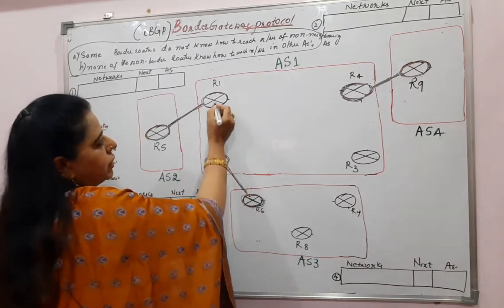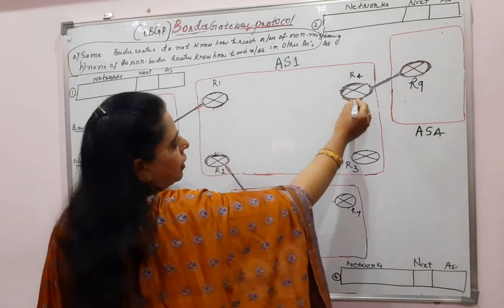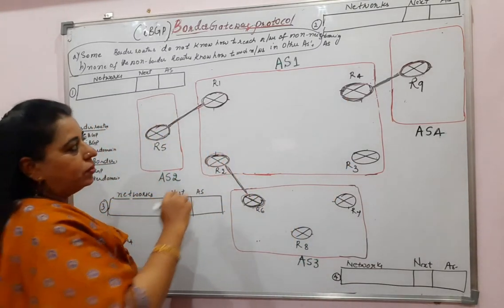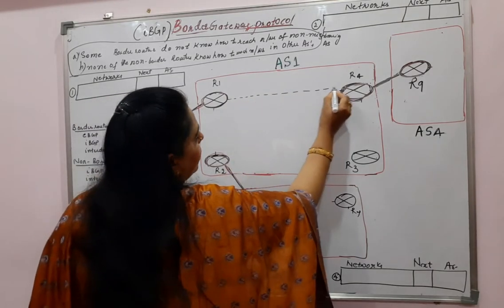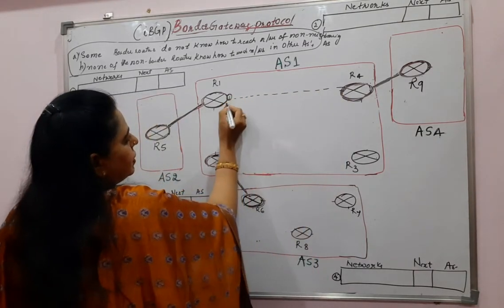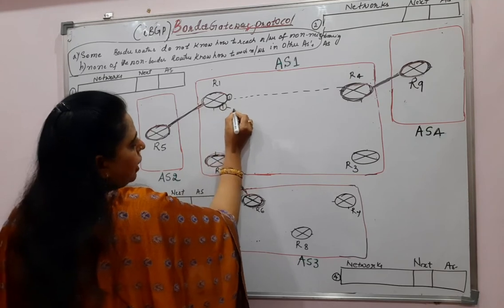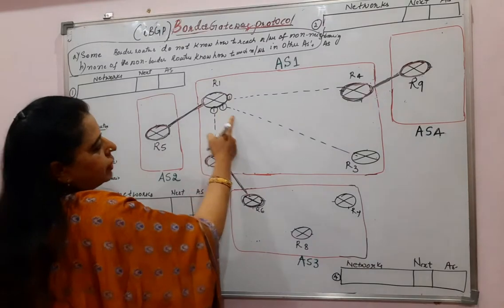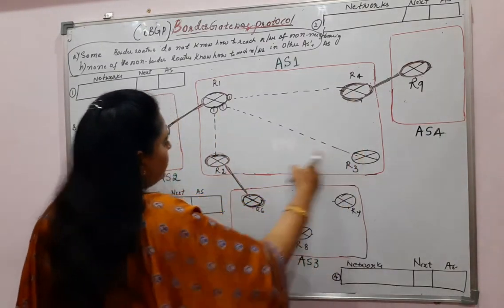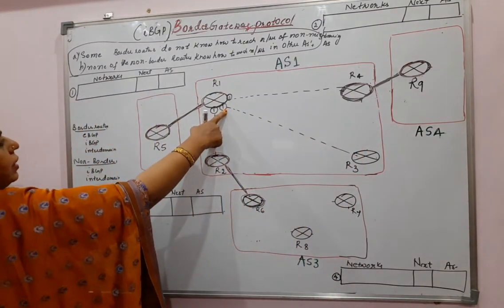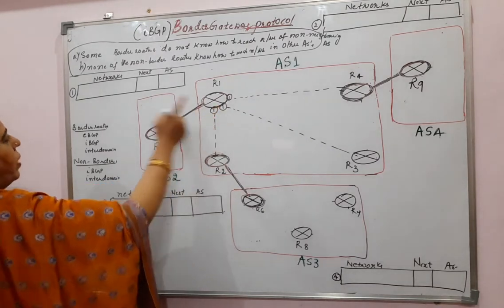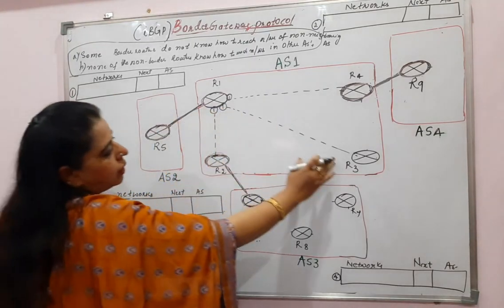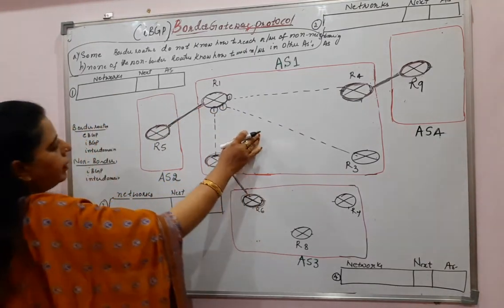R1 has R2, R3, and R4 in its autonomous system, so it must have sessions with all of them. I will show those sessions with dotted lines. R1 is sending message number 1 to R4, R3, and R2. That message number is indicated as number one in the diagram.